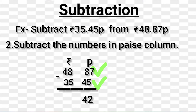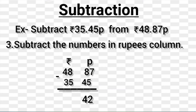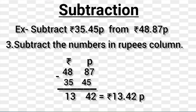Step 3: Subtract the numbers in the rupees column — 48 rupees minus 35 rupees equals 13 rupees. So we write 13 rupees in the rupees column and 42 paise in the paise column. At last, we get 13 rupees and 42 paise.